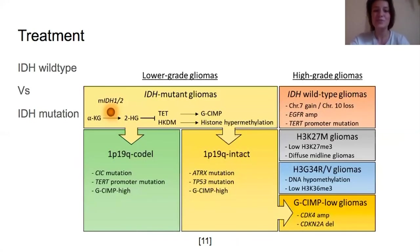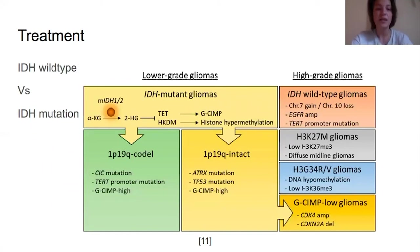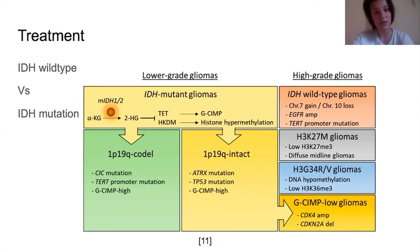IDH1 and IDH2 play an important role in glioblastoma treatment. Gliomas expressing the wild type are high grade, and those expressing the IDH mutation are considered low grade. Glioblastomas expressing the wild type are more aggressive than those expressing the mutation, as well as being less responsive to chemotherapy. It is hypothesized that patients with IDH1 and IDH2 wild type have less therapeutic responsivity due to the lack of vulnerability in the DNA repair pathways, unlike the weaknesses demonstrated by the IDH1 and IDH2 mutation, such as histone hypermethylation.